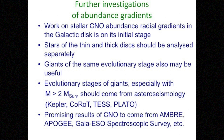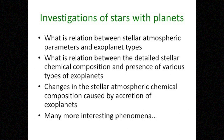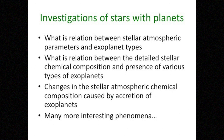So further investigations should be directed toward the analysis of the CNO mixing mechanism and gradients in the galaxy, and investigations of stars with planets. There are many interesting open questions: What is the relation between stellar atmospheric parameters and exoplanet types? What is the relation between detailed stellar chemical composition and the presence of various types of exoplanets? And how does accretion change the chemical composition of the star? Thank you for your attention.